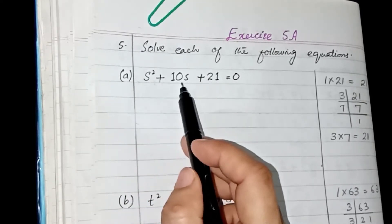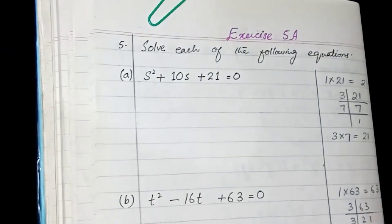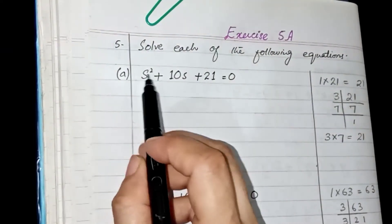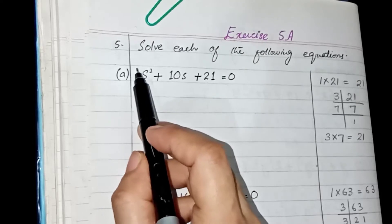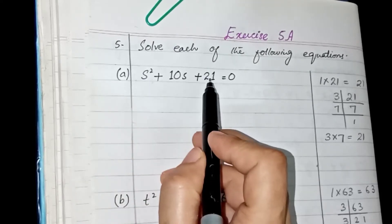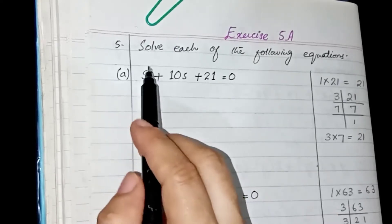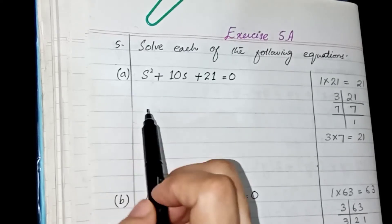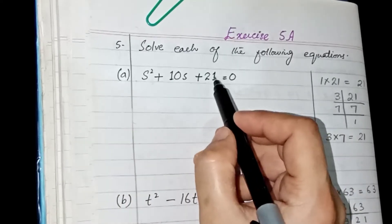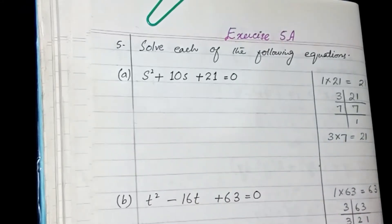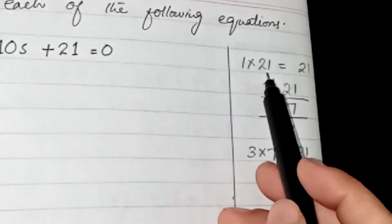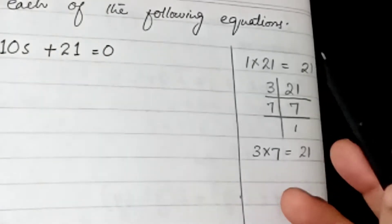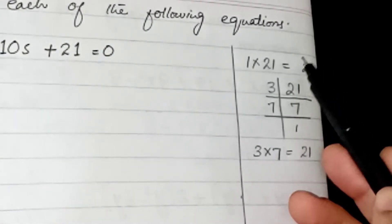For splitting the middle term, first we have to find its factors. To find the factors, multiply the coefficients of the first term and the last term. We have 1 as the coefficient of the first term and 21 as the coefficient of the last term. When we multiply 1 with 21, we get 21 as the answer. So we have to find the factors of this answer.